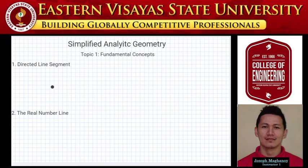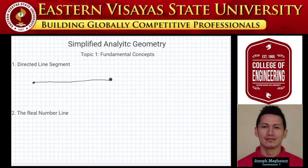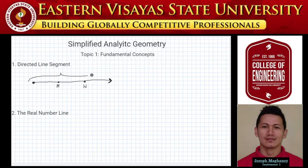We call it analytic geometry. For our first topic: directed line. A directed line is a line which has a definite sense of direction. For example, if we have a certain line with an origin and a direction, along that line we have two points, point M and point N.